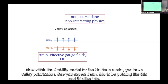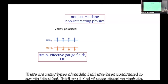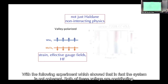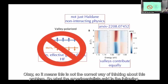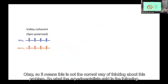Within the Kane-Mele or Haldane model you'd expect valley polarization. Many models have been constructed to explain this, but they encounter an obstacle: experiments show the system is actually valley coherent — both valleys are contributing. This means the valley-polarized picture is not the correct way to think about this problem.